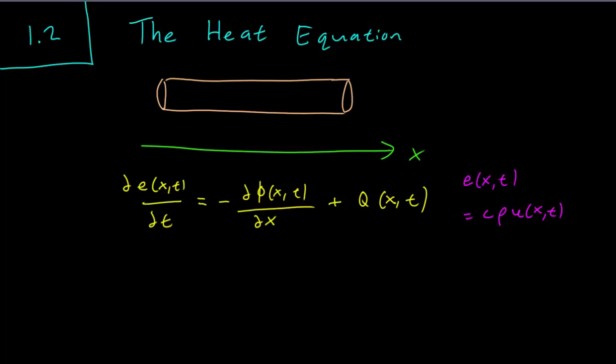Now as we mentioned in the previous video sometimes c and rho depend on x but to simplify things we are not going to write down the dependence and we can rewrite this left hand side now as c times rho times the partial derivative of temperature with respect to time.